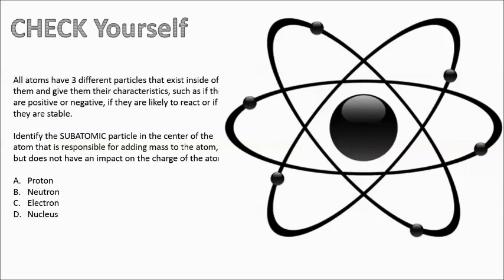We're going to extend ourselves to a more rigorous question based on what we've just learned. All atoms have three different particles that give them their characteristics, such as if they are positive or negative, or if they are likely to react or if they are stable. Identify the subatomic particle in the center of the atom that is responsible for adding mass to the atom but does not have an impact on the charge of the atom. Is it A, proton; B, neutron; C, electron; or D, nucleus? Did you say neutron? That would be correct. You are amazing.